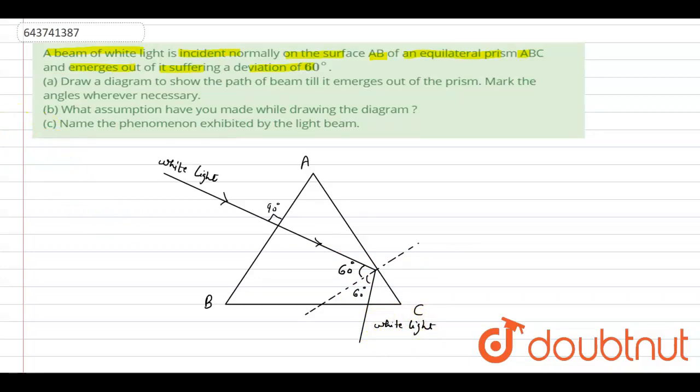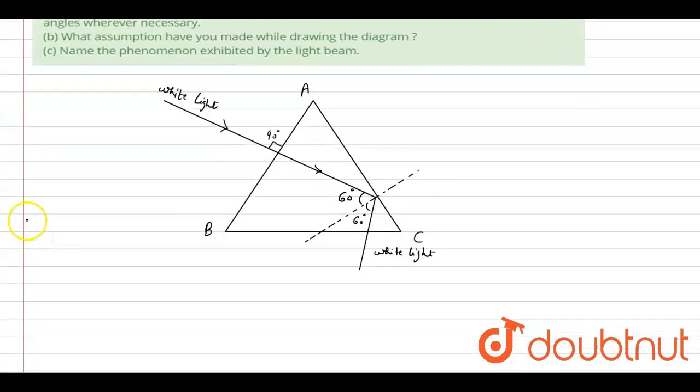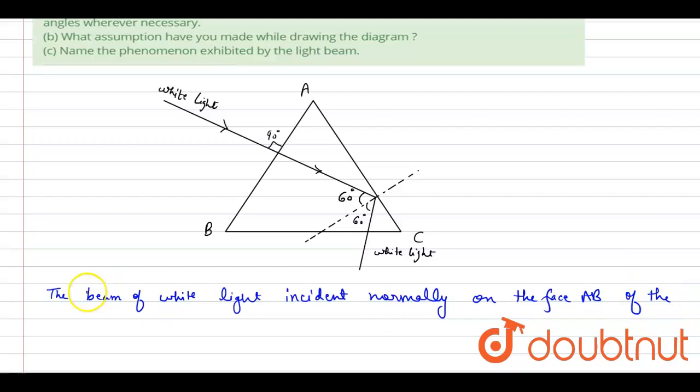So according to the diagram, write down: The beam of white light incident normally on the face AB of the prism passes and dives inside the prism and strikes